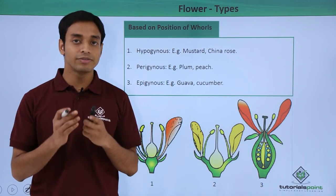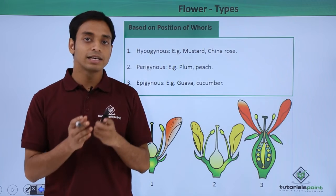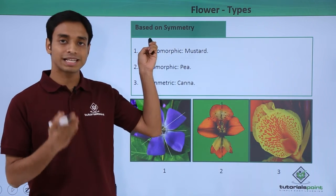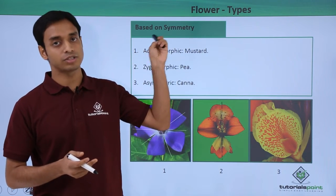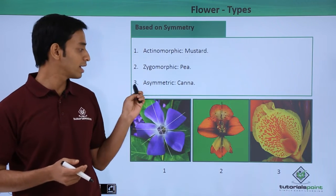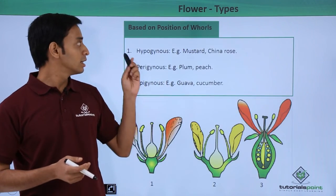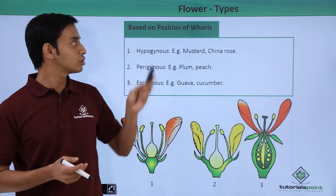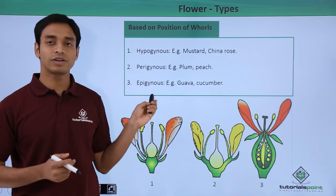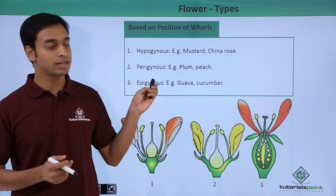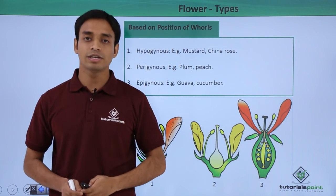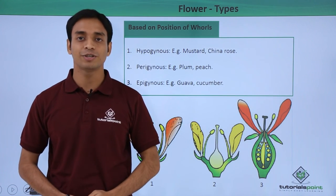In this video we have talked about the different types of flowers. The first classification was based on symmetry: actinomorphic, zygomorphic, and asymmetric flowers. The second classification was based on the position of the whorls: hypogynous, perigynous, and epigynous flowers. I hope you have understood — please like this video. Thank you.